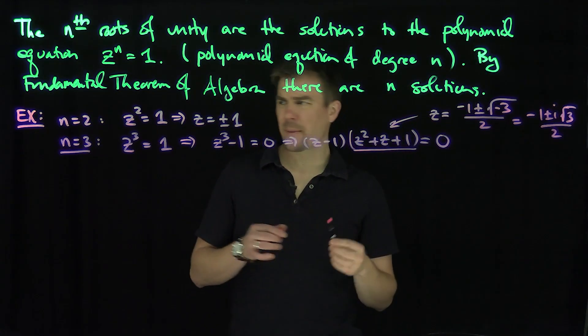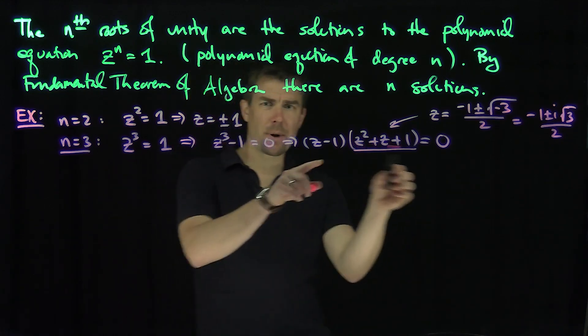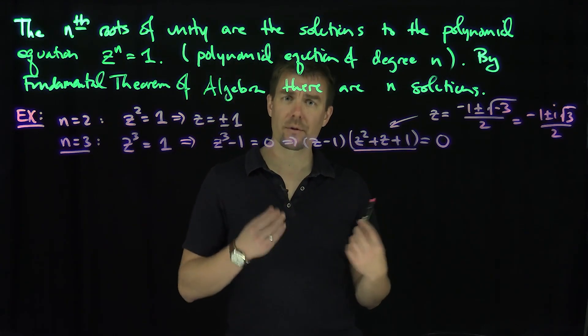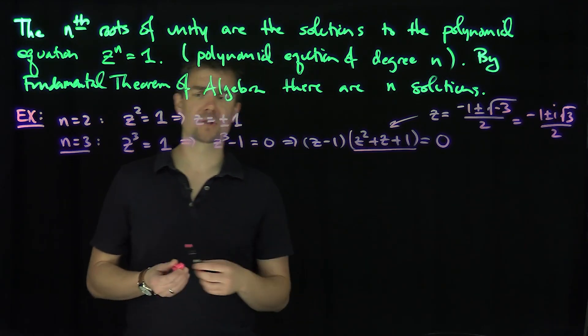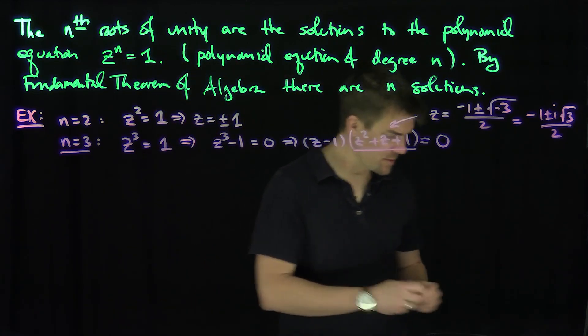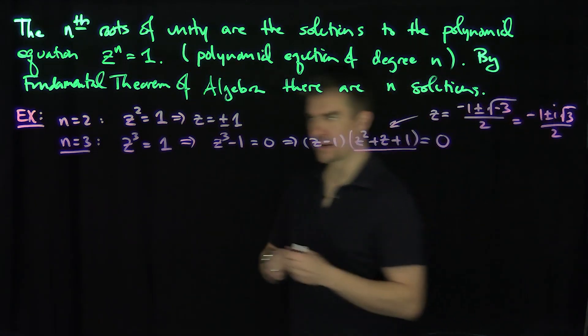When we do higher dimensional things like 4, 5, or 6, that polynomial is going to become much larger. It won't be quadratic any longer, so we're going to need other approaches to solve this. And that's where complex numbers come in and save the day. So let's now talk about the complex approach to solving these things.